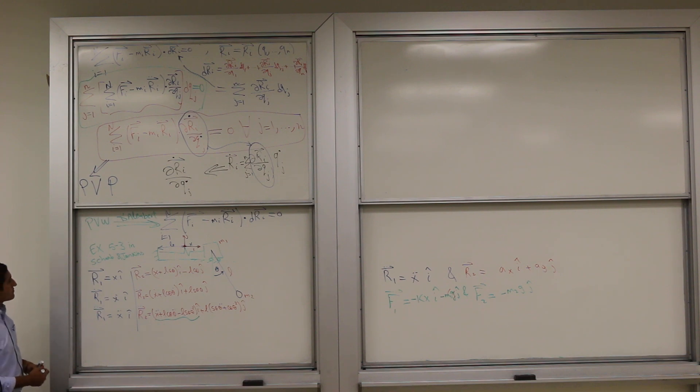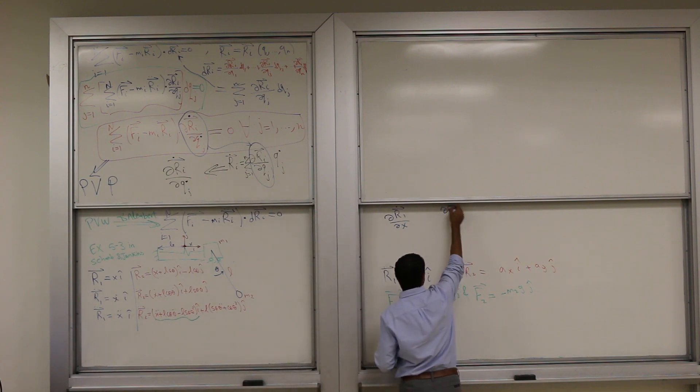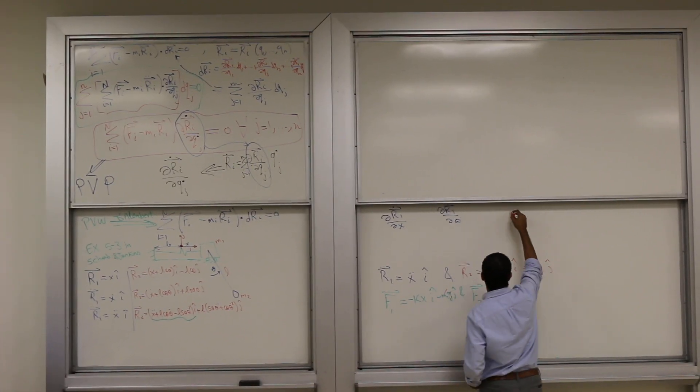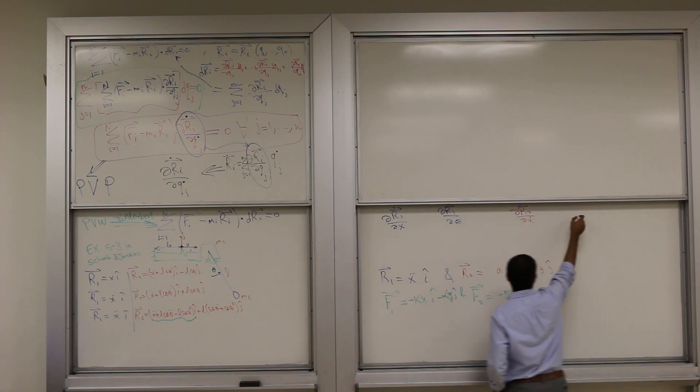Let's do it. So I need partial r_1 dot partial x dot, right? And partial r_1 dot partial theta dot. Your velocity coefficients.